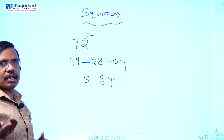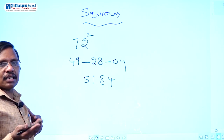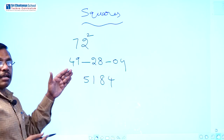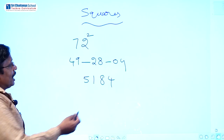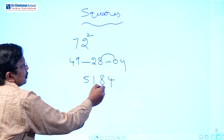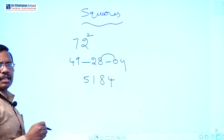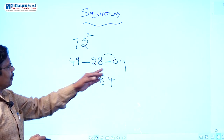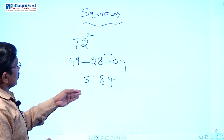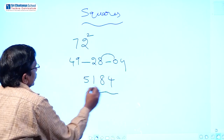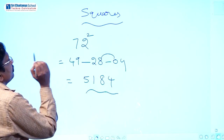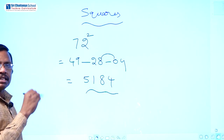For example 51 squared: you get 2601. After practising you can do the balancing simply in your head. This is the Vedic maths method for squaring any two-digit number easily and quickly.